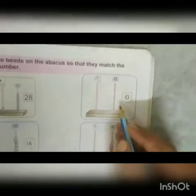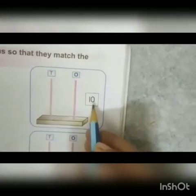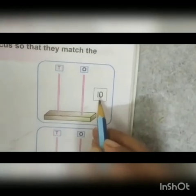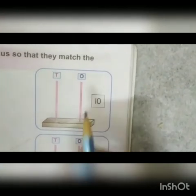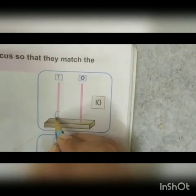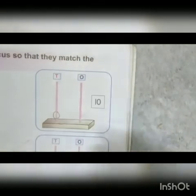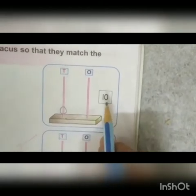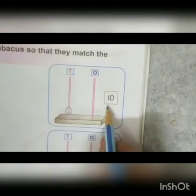Come to the next. Which number is this? 10. How many ones are there? 0. 0 means nothing, so we will not draw any beads. Now how many tens are there? 1. Now we will draw 1 bead. 10 means 10. It is matched with the given number.